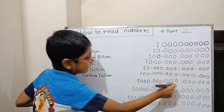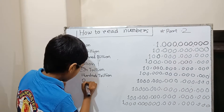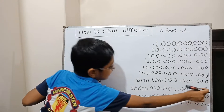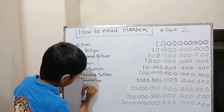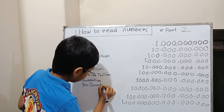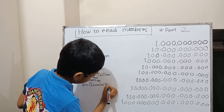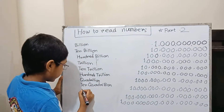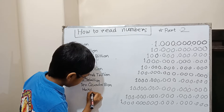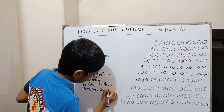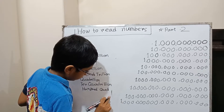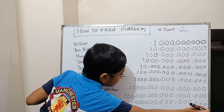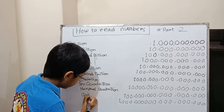One and fifteen zeros means quadrillion. One and seventeen zeros means hundred quadrillion. And one and eighteen zeros means quintillion.